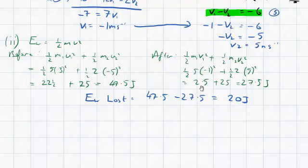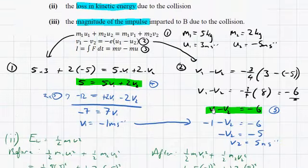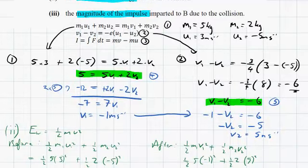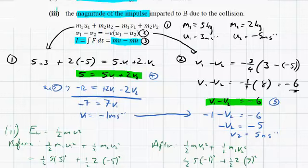Now what we have to do next is to find the magnitude of the impulse imparted to B due to the collision. That's kind of like the difference in momentum that B experienced. So we'll use this part of the equation for the impulse here. We won't bother with the integral of the force with respect to time. We'll just use I equals mv minus mu.